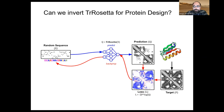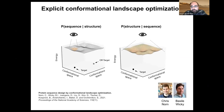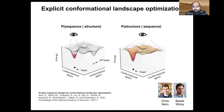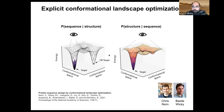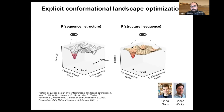You might wonder: why not just design a method that goes directly from structure to sequence? The hypothesis is that by inverting a structure prediction model, we're able to see the entire conformational landscape. Traditional fixed-backbone methods like fixed-backbone Rosetta only see the one target structure — so a designed sequence might actually fold into a completely different structure. In contrast, a structure prediction model that sees the entire conformational landscape, if you push it toward the target, hopefully won't fold into other structures.